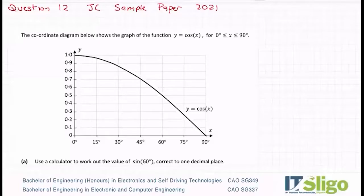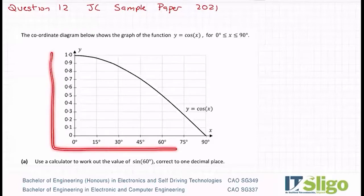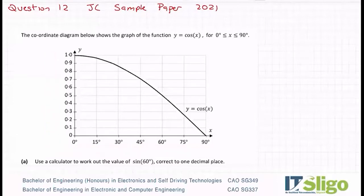Let's have a look at question 12 on that sample paper. The coordinate diagram below shows the graph of the function y is equal to cos x for 0 degrees is less than or equal to x is less than or equal to 90 degrees. So they've given us a plot, a graph of cos x, and they've plotted it from 0 to 90 degrees.